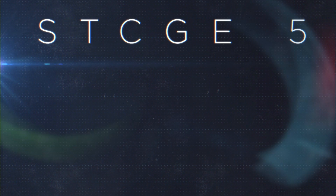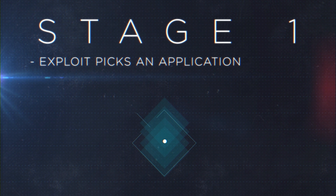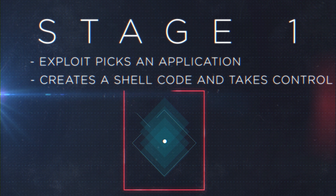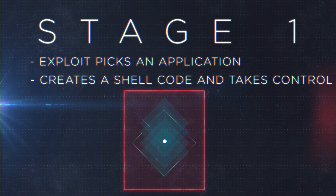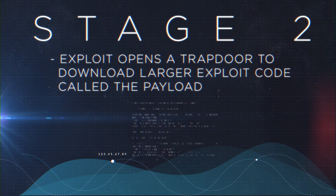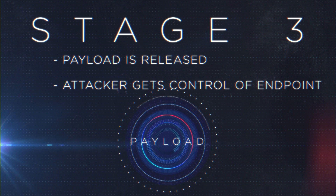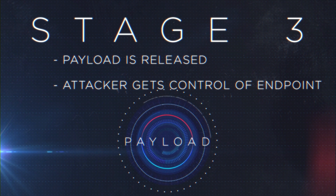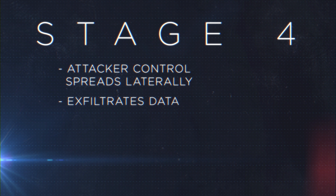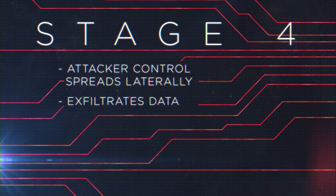Now let's examine how an exploit is executed. First, the hacker identifies their exploit at target applications, such as Office, PDF, social media, or browsers, and then creates a shellcode to establish a level of control over the application. Second, the exploit will open a trap door into the target application to download larger exploit code, called the payload. Third, the payload conducts additional malicious activity that ultimately provides the attacker with control over that endpoint. From there, the attacker is free to find company resources and assets, to move laterally, and to exfiltrate the targeted information.